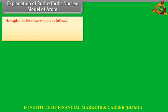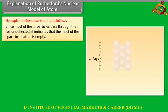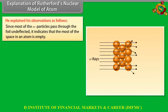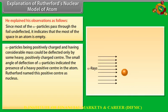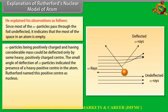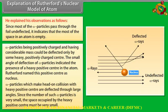Rutherford explained his observations as follows: (1) Since most alpha particles passed through undeflected, most of the space in an atom is empty. (2) Alpha particles, being positively charged with considerable mass, could only be deflected by a heavy positively charged center — small deflections indicated the presence of a heavy positive center, which Rutherford named the nucleus. (3) Alpha particles making head-on collision with this center are deflected through large angles; since such particles are very few, the nucleus must occupy a very small space.